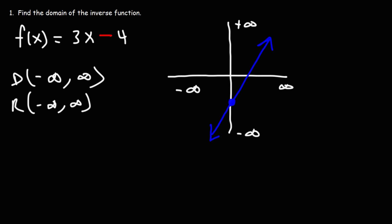In order for this function to have an inverse function, it must be a one-to-one function, which means that it must pass the horizontal line test. It can only touch the horizontal line at one point. So because this function is one-to-one, the inverse function exists.